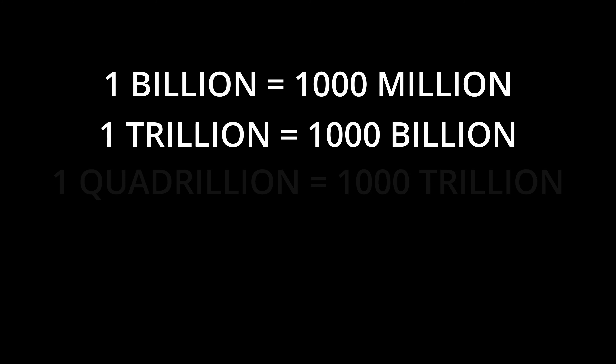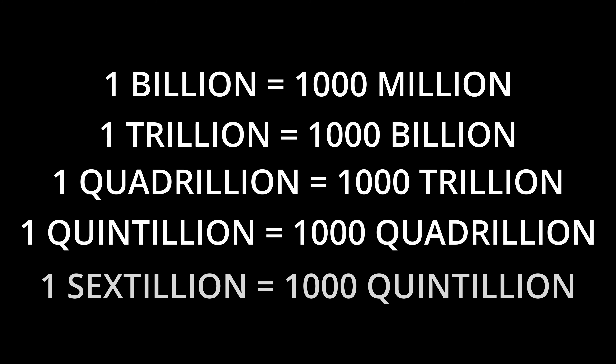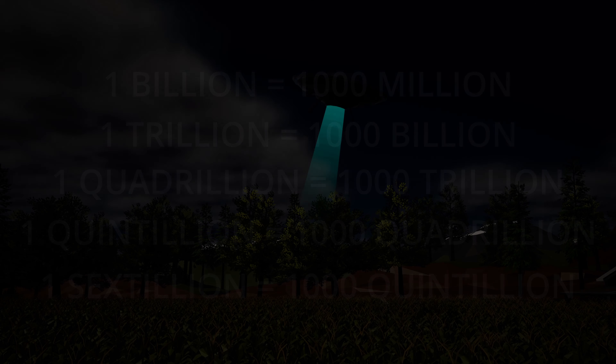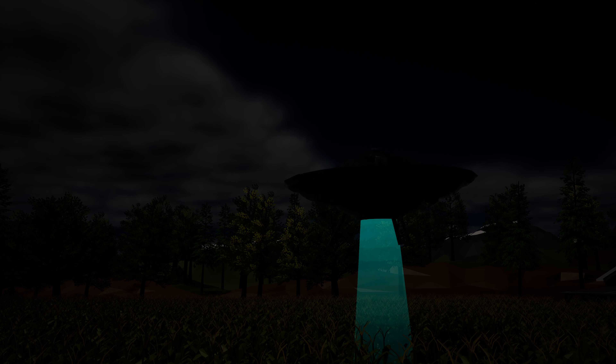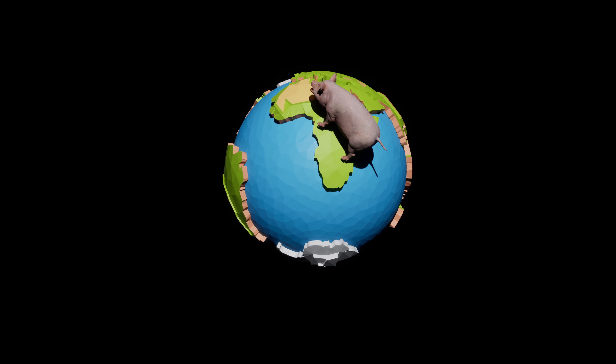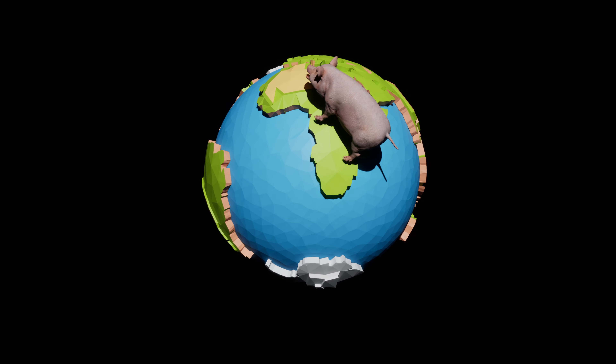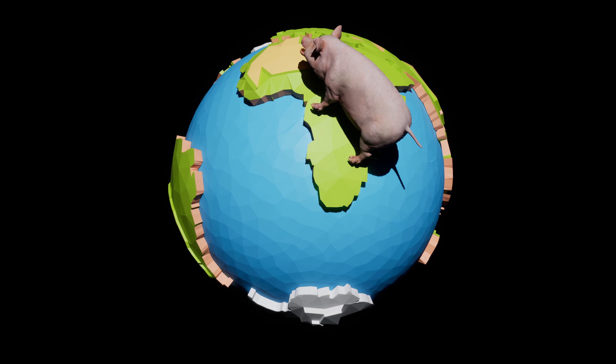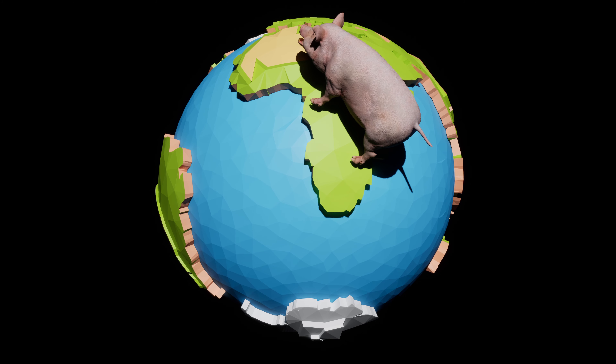Most people think sextillion is a fake word, but it's very real. So what does this mean about the existence of life on other planets? Well, let's imagine that the chance of some form of life existing on a planet is one trillionth of a percent — that's a 0.0000000000001% chance of life existing on a planet.